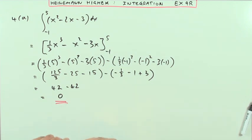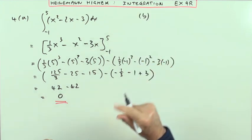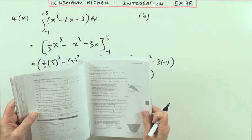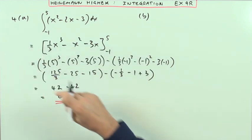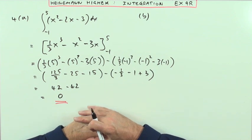So that was the first bit. Second part. Now the second part said, draw a sketch to explain. Well, that answer requires no explanation. 42 take away 42 is 0, plain and simple.